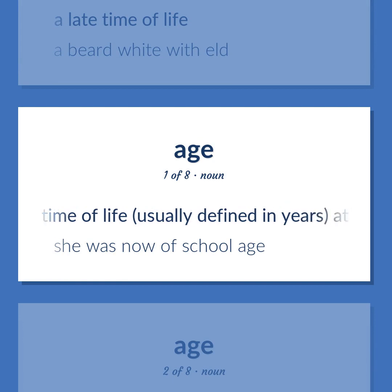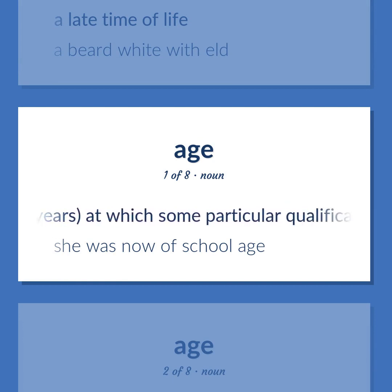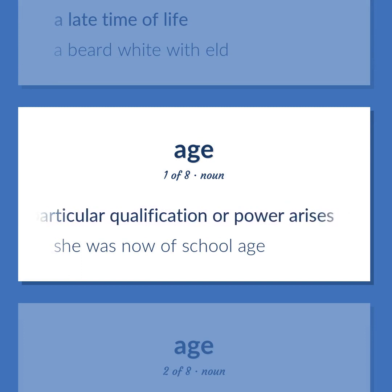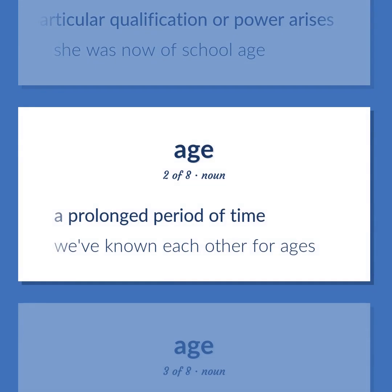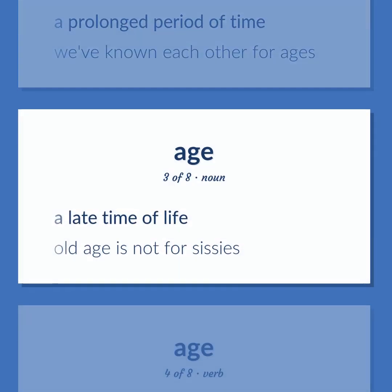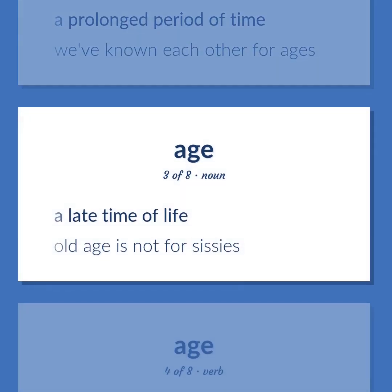A time of life, usually defined in years, at which some particular qualification or power arises. Example: She was now of school age. A prolonged period of time. Example: We've known each other for ages. A late time of life. Example: Old age is not for sissies.